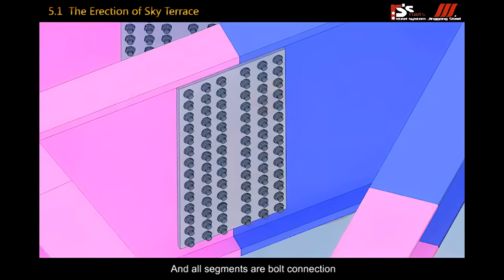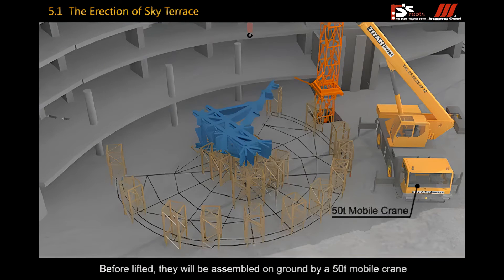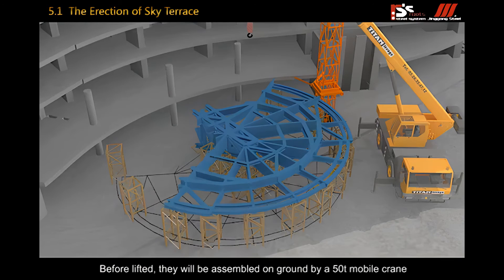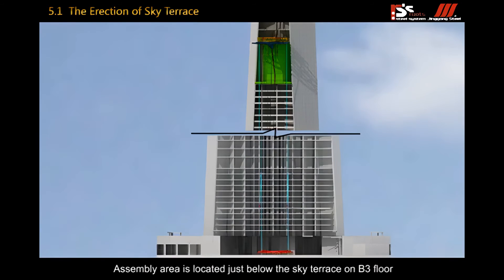All segments have bolt connections. Before being lifted, they will be assembled underground by a 15-ton mobile crane. The assembly area is located just below the sky terrace on B3 floor.